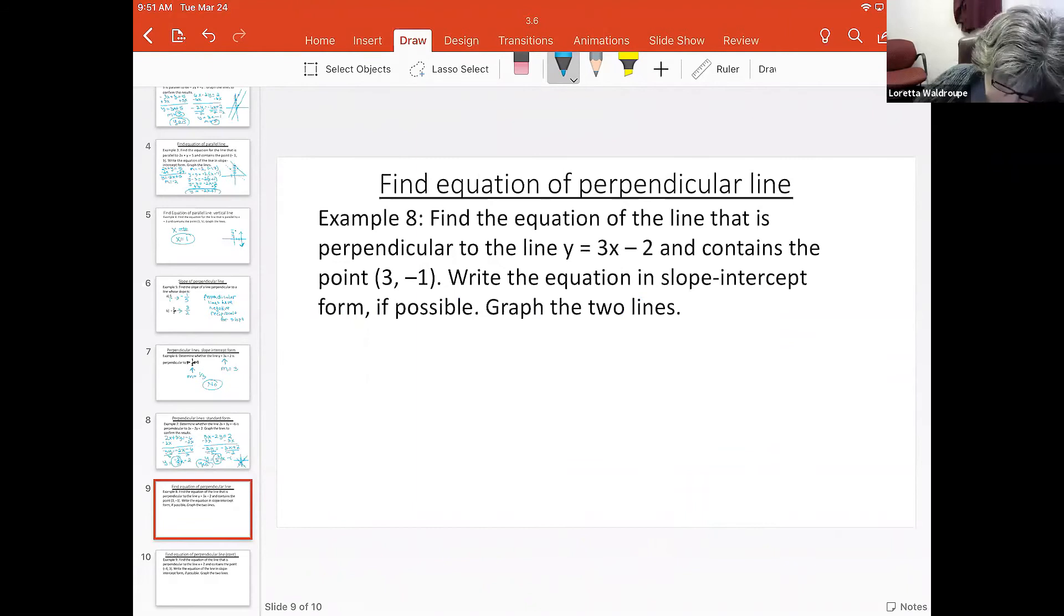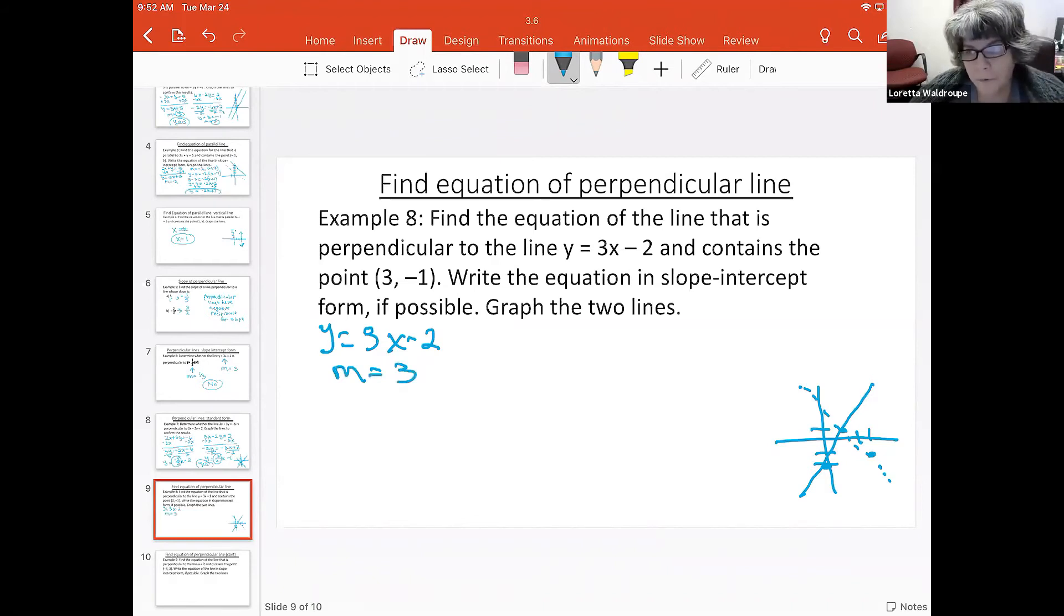If the equation is y equals 3x minus 2, so if we go over here like we did on the parallel one, that's at negative two up three over one. We know that line, and we have the point (3, -1), and we want to know what's the equation of that perpendicular line. Well, the slope here is three, so the perpendicular slope that we want to use would be negative one over three.